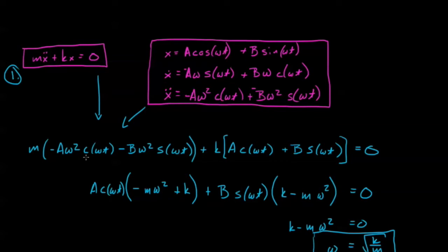I plug in my assumed solution, you can see the terms in the right parenthesis are for the x equation, and the terms in the left parenthesis are for the x double dot equation. And I see that the only way for this equation to be true for all time is if either a and b are zero, which is a trivial solution.